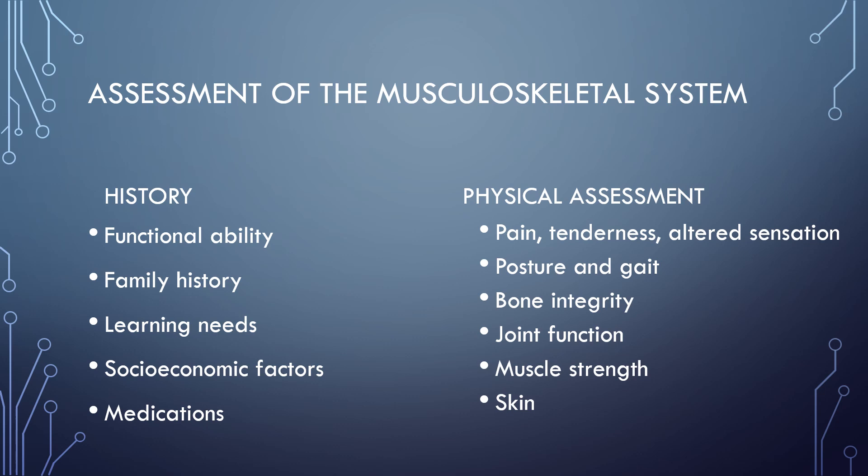When we complete our physical assessment, we need to assess for any areas that are painful, tender, or have altered sensation. We want to assess their posture and gait while ambulating. If needed, we should assess their bone integrity and joint function. We may need to assess their muscle strength as well. We should be assessing their skin, as that is a great way to determine how well they're functioning.